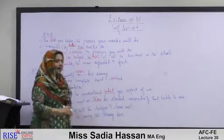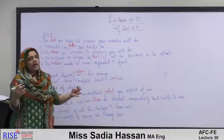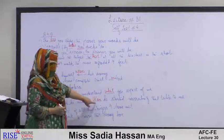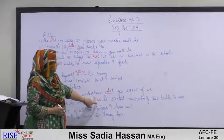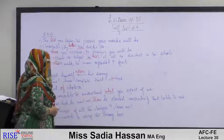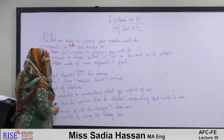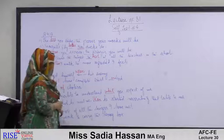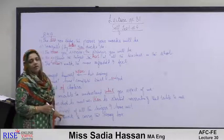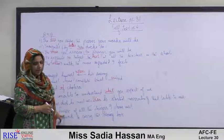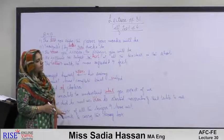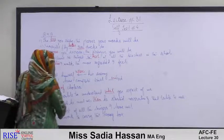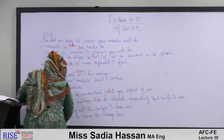'No sooner did he meet me than he started' — 'no sooner' and 'than' are correlative conjunctions; they are always used in this pair. She is the finest — 'finest' is the superlative degree of the adjective, so we always use 'the' before the superlative. He is too weak to carry this heavy box.